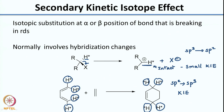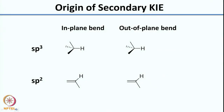Now, whatever we had studied about primary kinetic isotope effects, one thing you must understand is that when you talk about kinetic isotope effects, the vibrational levels are very important. So in order to understand secondary kinetic isotope effects, we should look at the vibrations that are involved. Since the bond is not breaking, the stretching vibrations do not make as much of an impact as in the primary kinetic isotope effect. What plays a very important role is the bending vibrations.